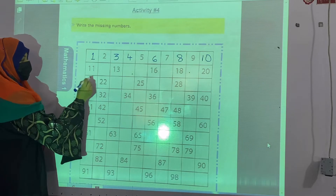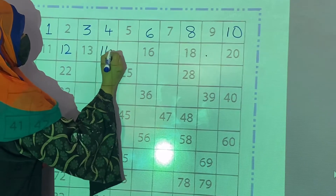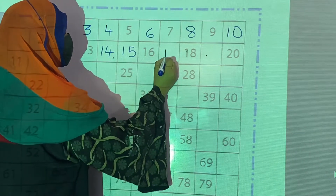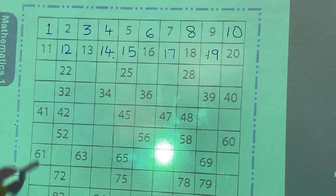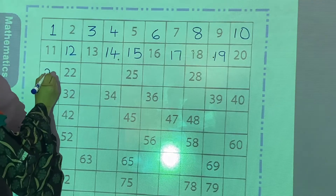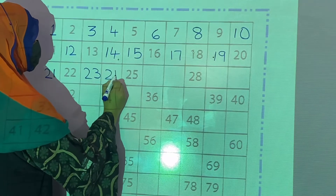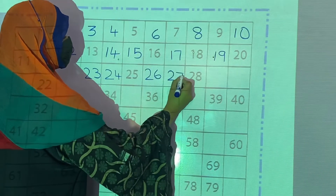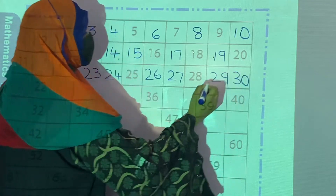After 10? 11. Then 12. 13 is mentioned. What comes after 13? 14. Then 15. 16 is mentioned. What comes after 16? 17, 18, then 19 and 20. Now what comes after 20? 21. What comes before 22? 21. Then 22, 23, 24, 25. Then 29 and 30. In this way you will complete this activity.